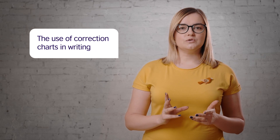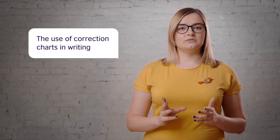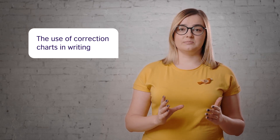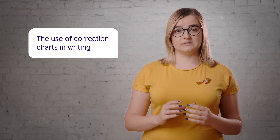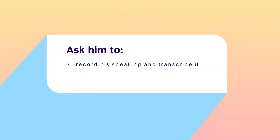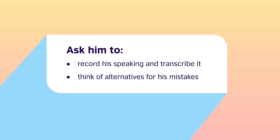Okay, first of all, the use of correction charts in writing and asking him to work out the mistakes on his own is a solid start. Then, since there is a disparity between what he thinks of his skills and what they are in reality, we need to think of something that will help him see the reality but won't crush him. We can ask him to record his speaking and to transcribe it. Next, he could either look for the mistakes on his own or bring it to the teacher to have a quick look over and use the symbols from the correction chart.